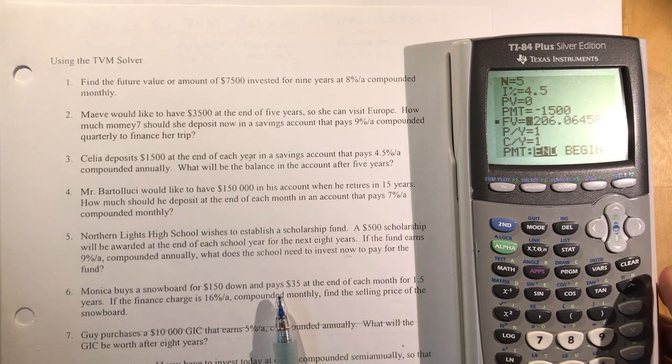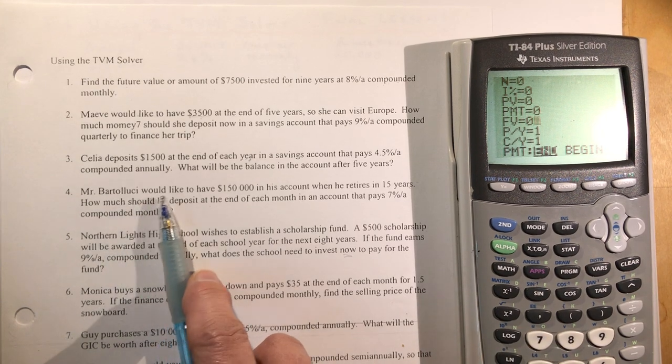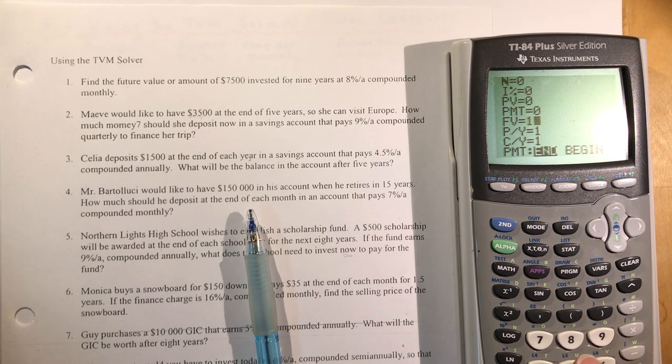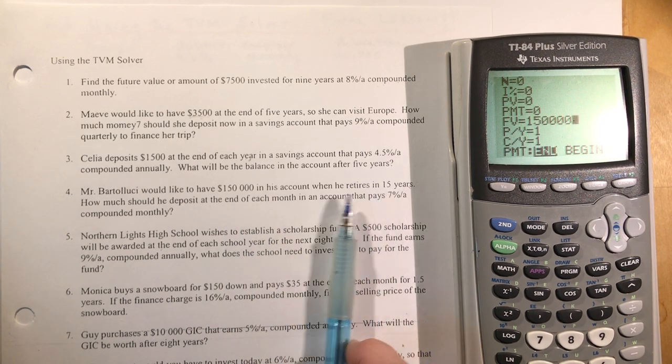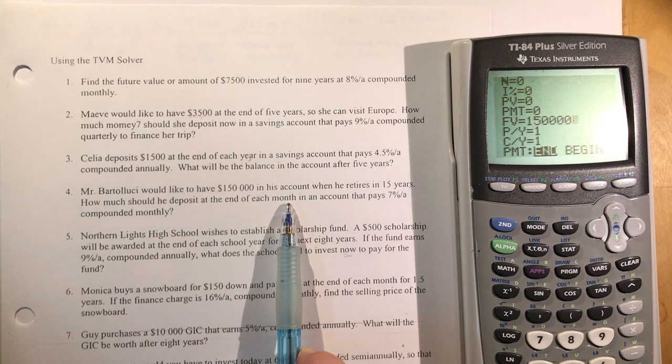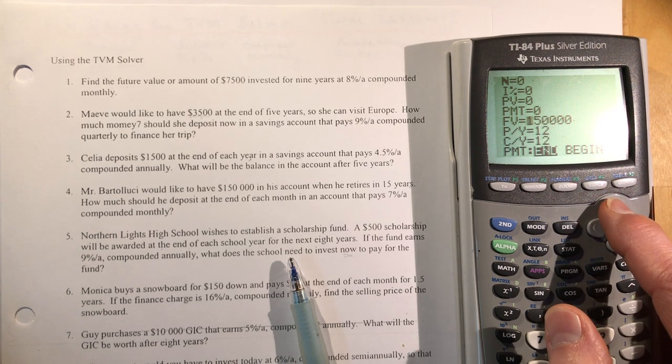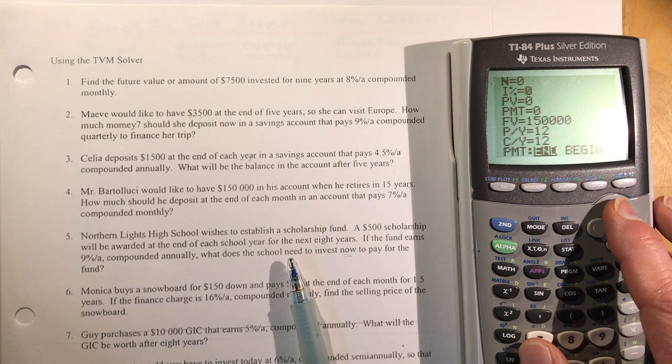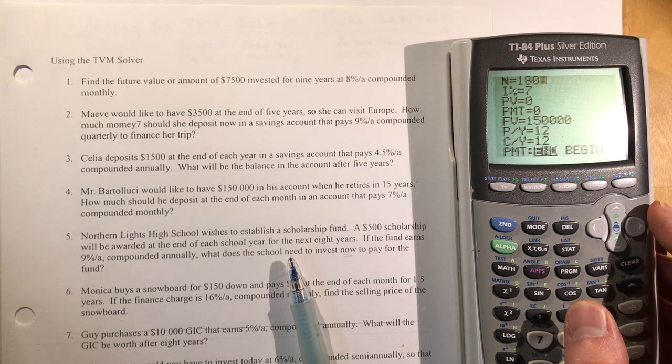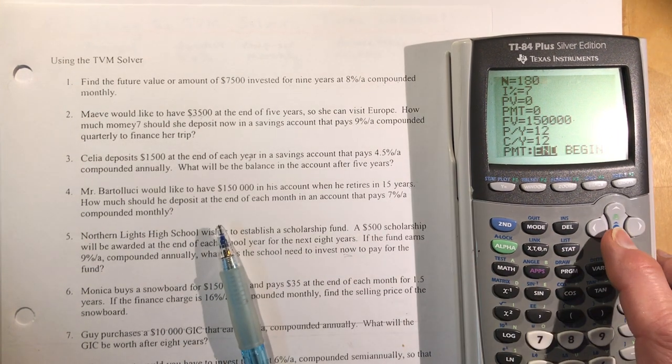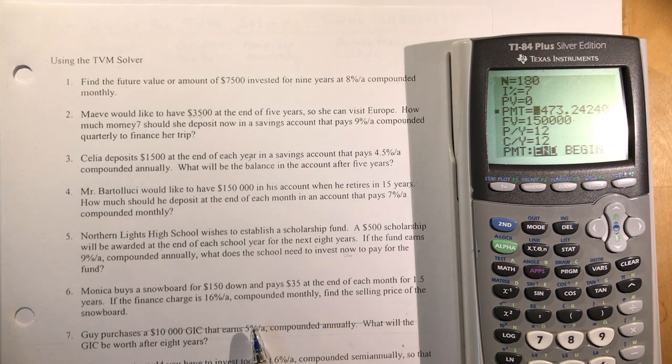Mr. Bottolucci would like to have $150,000 in his savings account when he retires in 15 years. That's future value, positive because he's going to get this money out of the bank. How much should he deposit at the end of each month? I'm looking for the payment in an account that pays 7% compounded monthly. I want monthly here, that's 12. The interest rate is 7%. The n value is 180, which is 15 years times 12. Alpha, enter. He should put in $473.